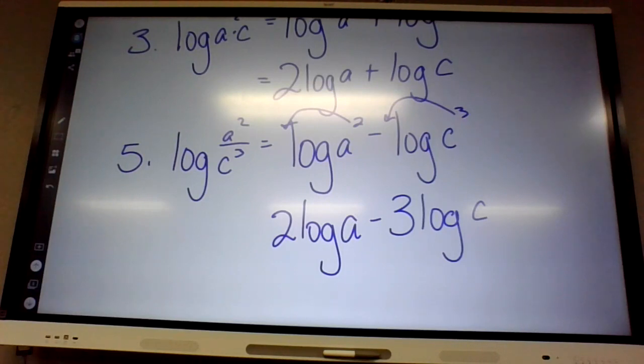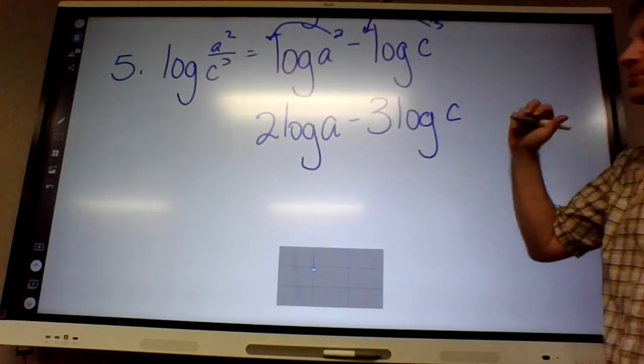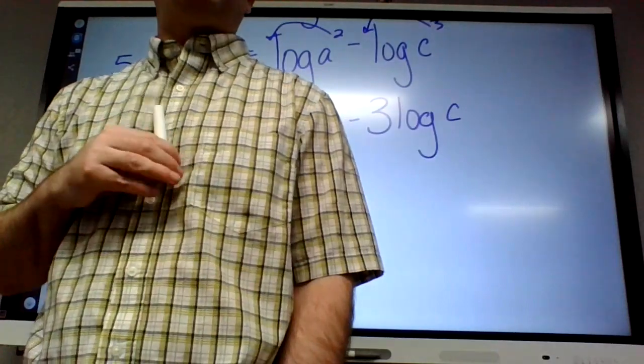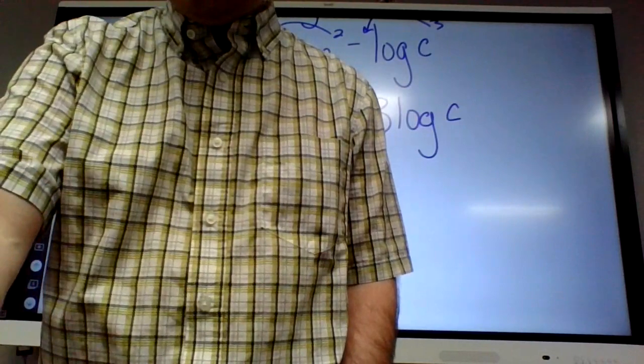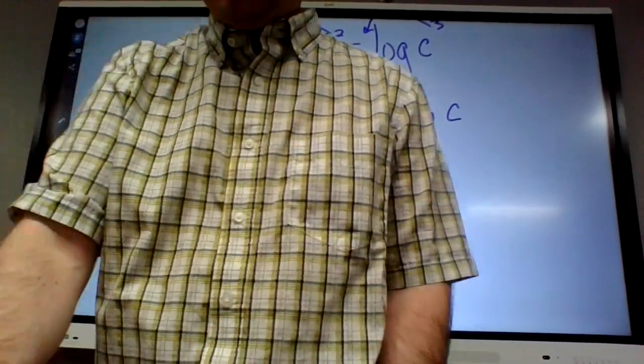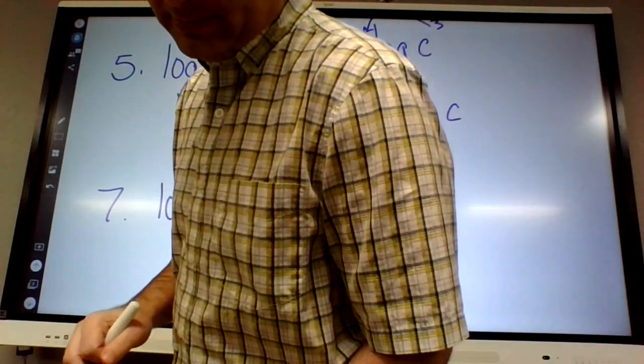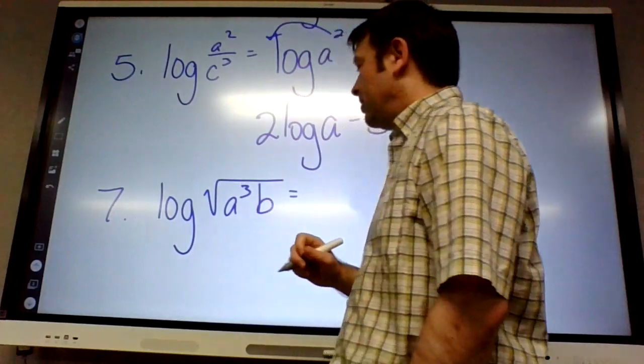This is log of a squared minus log of c cubed. And then what are we going to do with those exponents? Move them to the front. So this becomes 2 log of a minus 3 log of c. We're going pretty fast because there's not a lot to it. Does it get harder? A little bit, yeah.